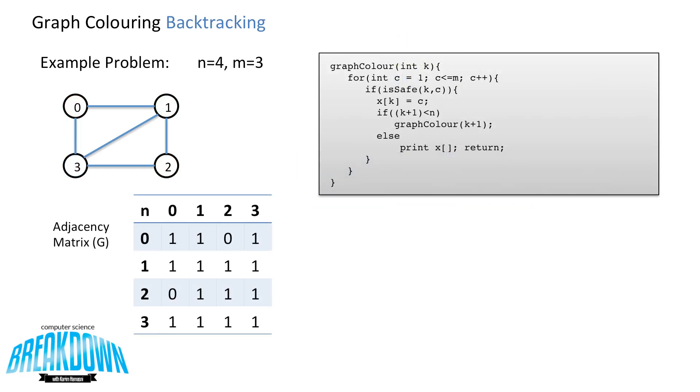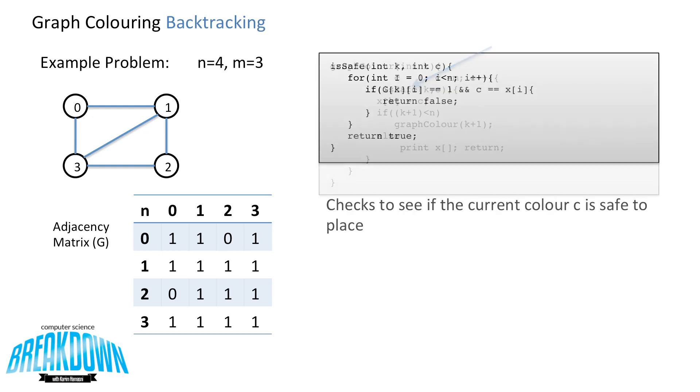So now let's take a look at the graph coloring function again and notice that the isSafe function denoted here by this arrow is called. So let's examine how isSafe works, which checks to see if the current color C is safe to place.